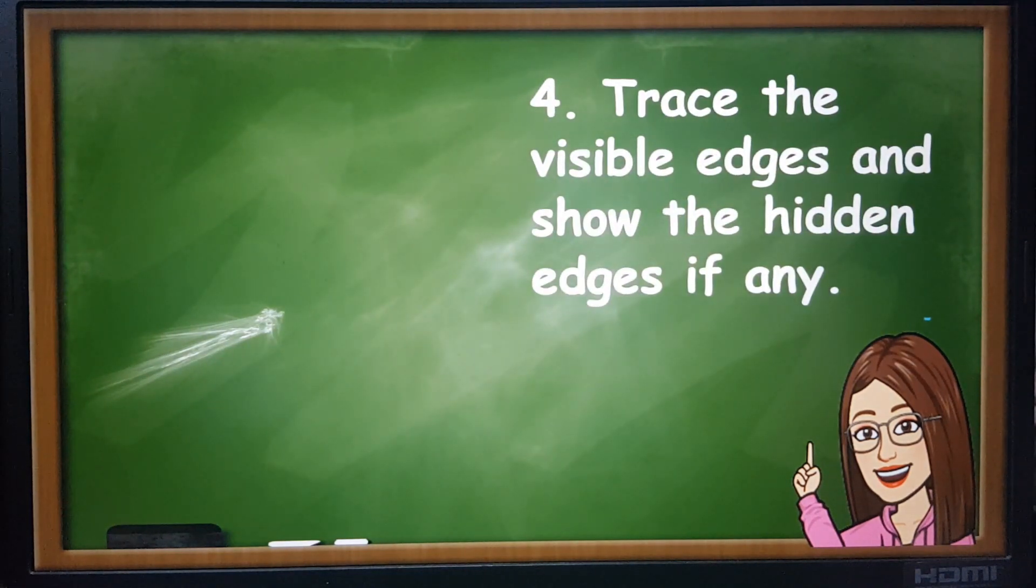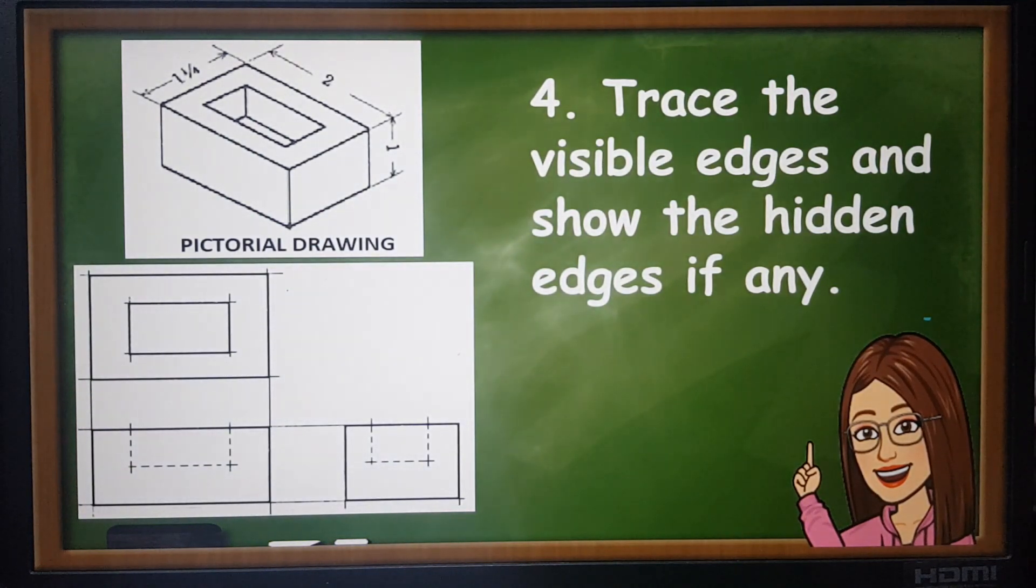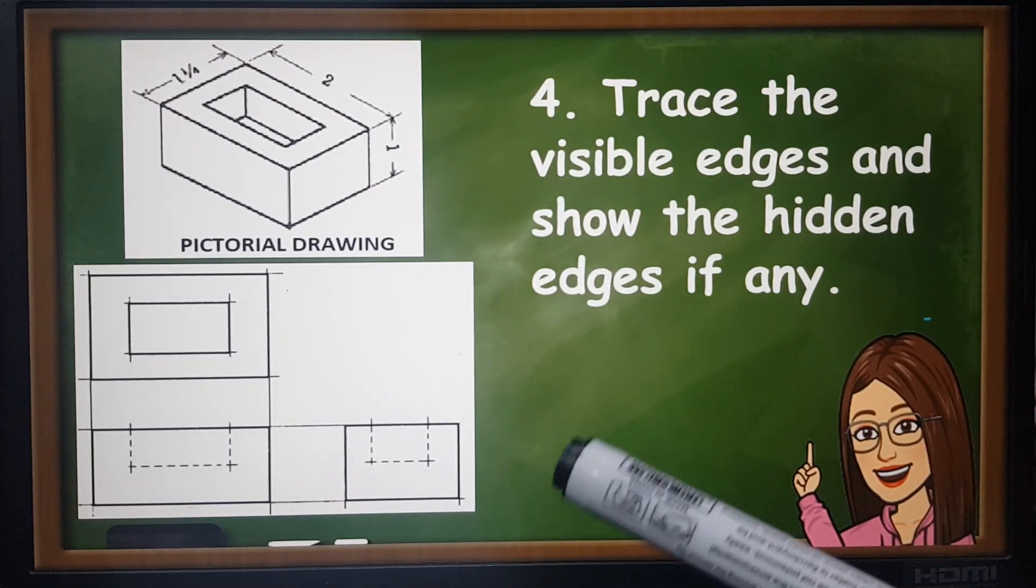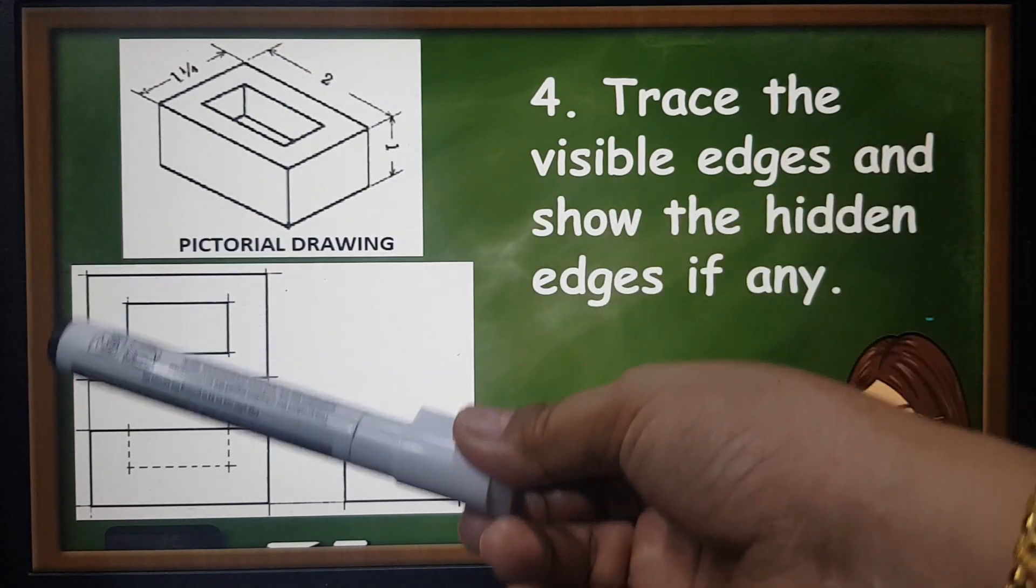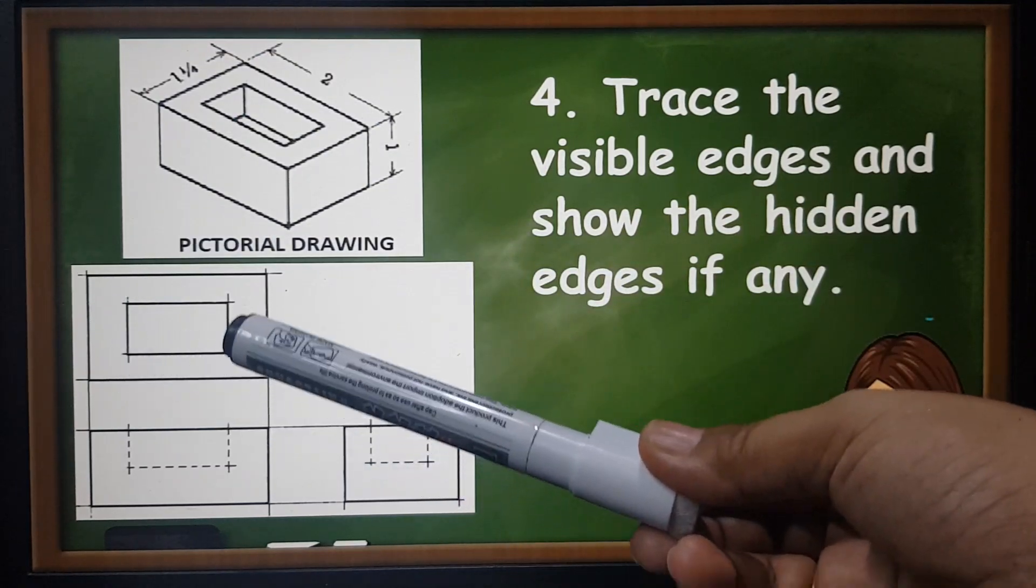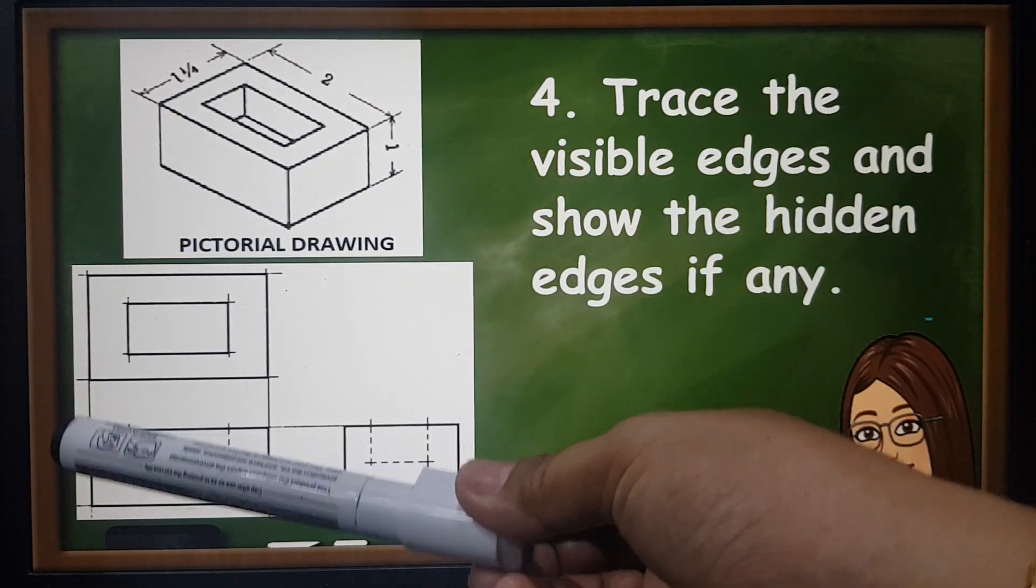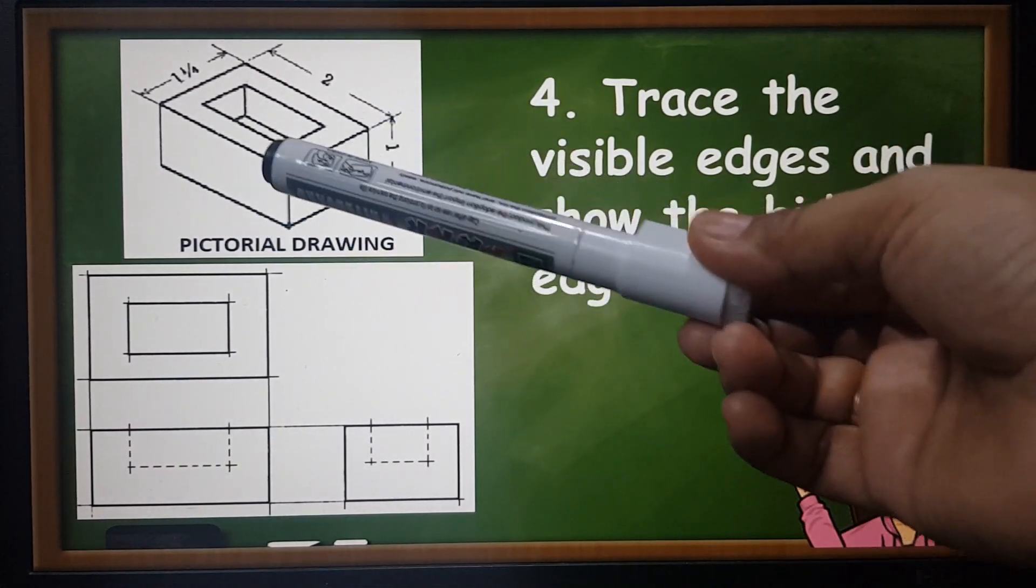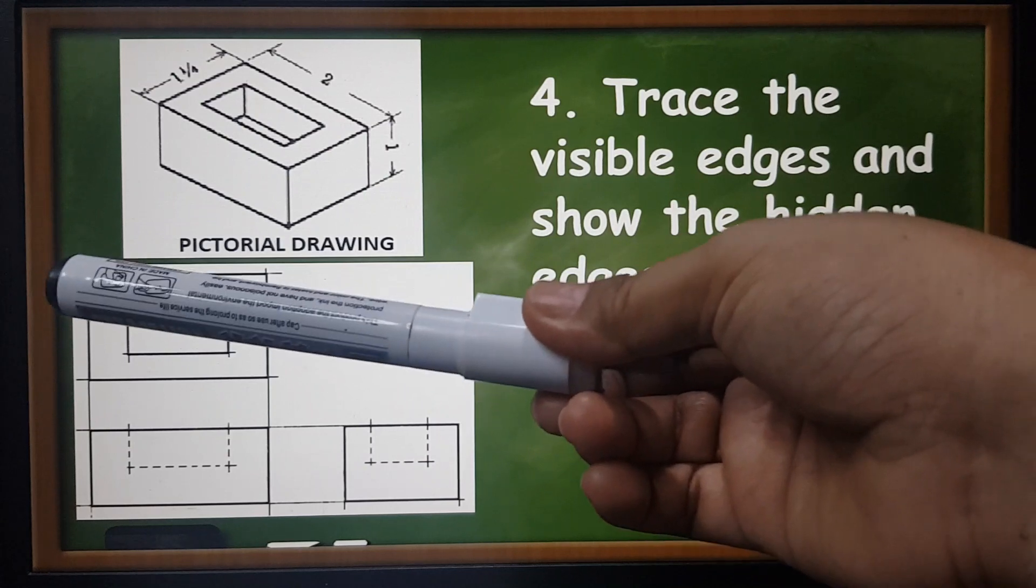Number four: trace the visible edges and show hidden edges if any. This time you're going to use a heavier line for your visible line. On the top the visible lines are one, two, three, four. On the front view, the visible lines. On the right side, one, two, three, four. How about the hidden lines? If you're going to project on the front